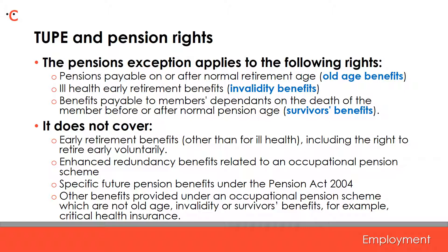The exception only applies to occupational pension schemes — it does not therefore apply to any other pension arrangement, and therefore that other arrangement does transfer to the transferee under TUPE. The pensions exemption only applies to old age, invalidity and survivor's benefits under an occupational pension scheme. This exemption does not therefore cover the following benefits, and so the obligation to provide them transfers to the transferee: early retirement benefits other than ill health, including the right to early retirement voluntarily; enhanced redundancy benefits related to an occupational pension scheme; specific future pension under the Pensions Act; and other benefits provided in an occupational pension scheme which are not old age, invalidity or survivor's benefits — for example, critical health insurance.